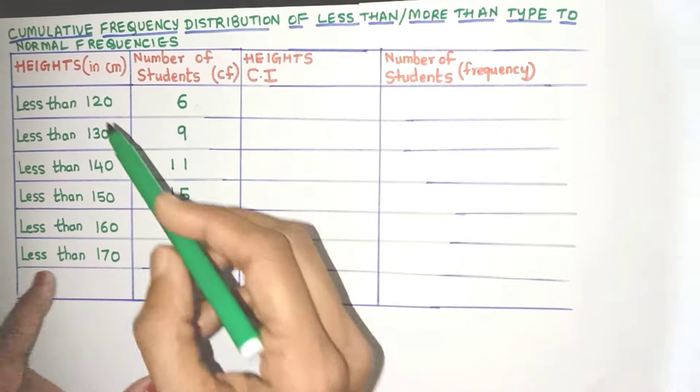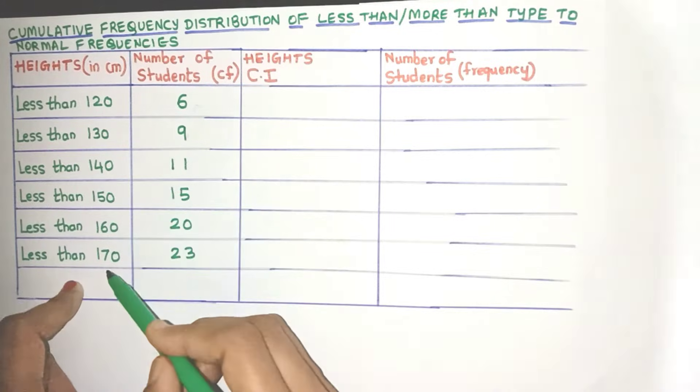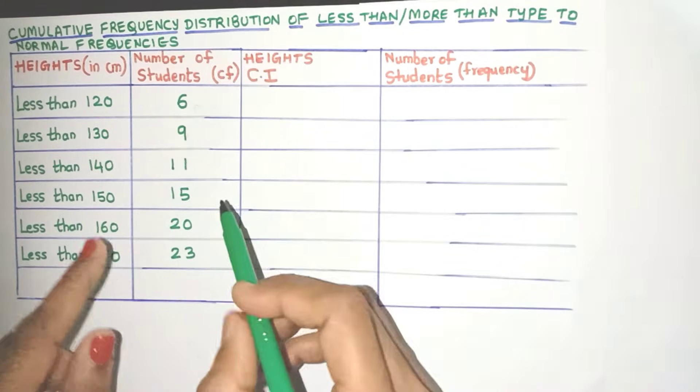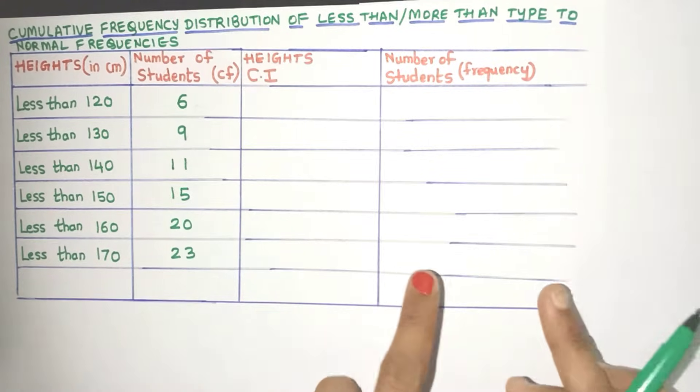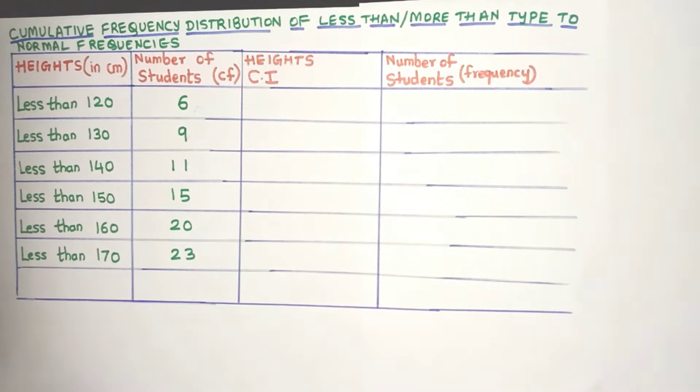So in this example, we have the heights which are in the less than type and number of students which is given as cumulative frequencies. We have to find the normal class intervals and the normal frequencies. So let's see how to do it.